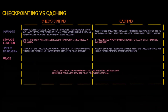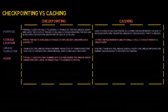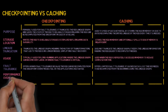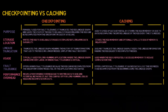Regarding usage — Checkpoint is typically used for long-running applications where the lineage graph can become very large, or where fault tolerance is critical. Cache is used when the RDD is repeatedly accessed in memory to reduce computation time. Regarding fault tolerance — Checkpoint offers higher fault tolerance because the RDD can be recomputed from the checkpoint even if nodes fail or the application is restarted. Cache offers limited fault tolerance; if cached data is lost, the RDD needs to be recomputed from the beginning using the lineage graph. Regarding performance overhead — Checkpoint incurs a performance overhead due to writing data to disk and potential network I/O, but this can pay off for long-running jobs by reducing recomputation costs. Cache is generally faster as it keeps data in memory, but can lead to memory pressure and possible spilling to disk if memory is limited.